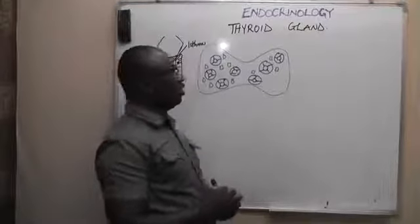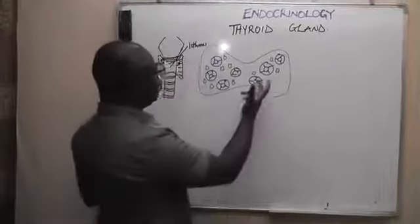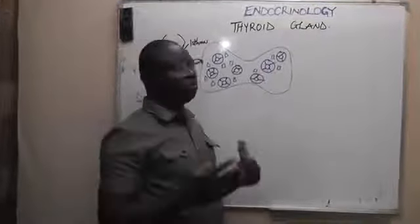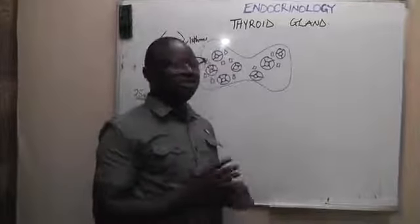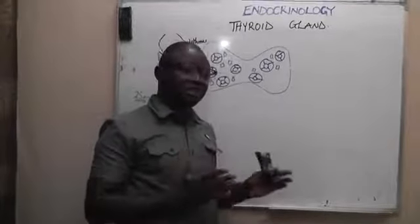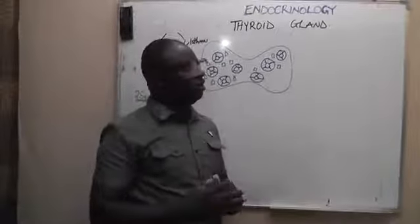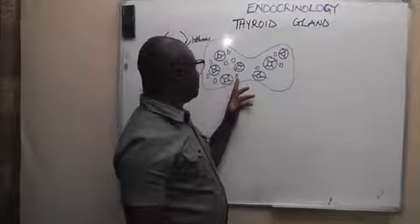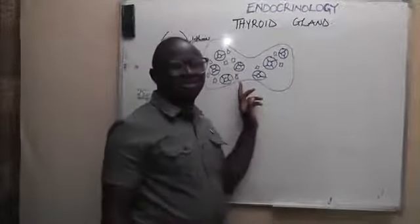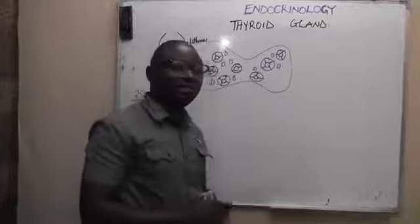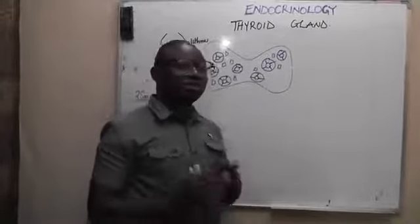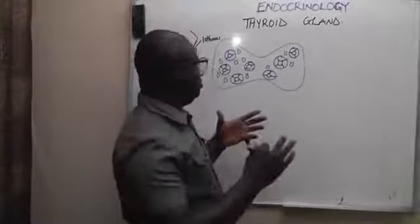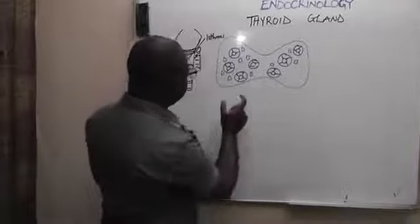The follicular cells produce two types of hormones: T3 and T4. The C cells, or para-follicular cells, produce calcitonin.